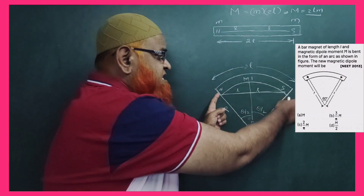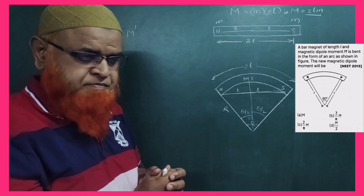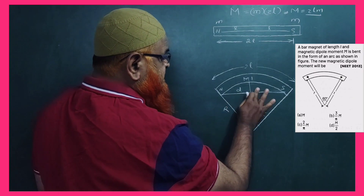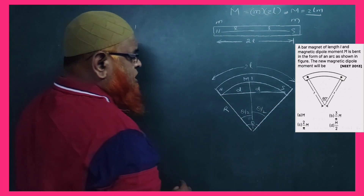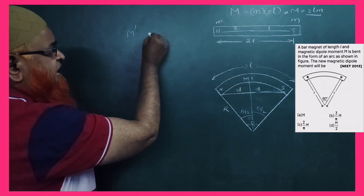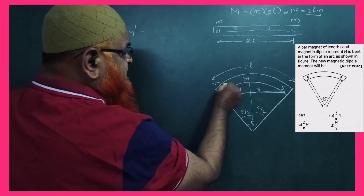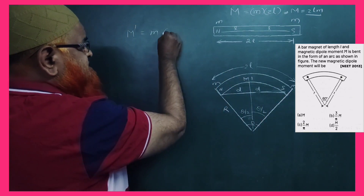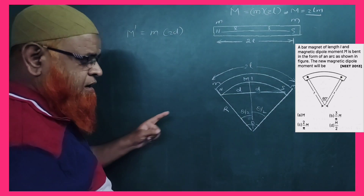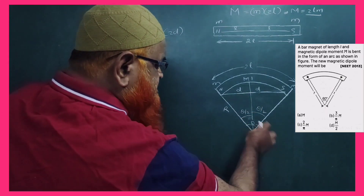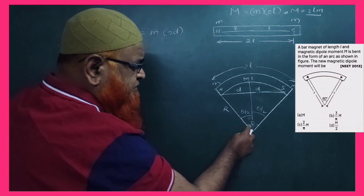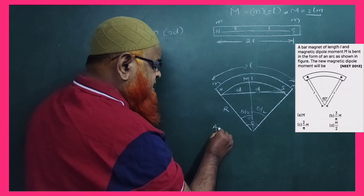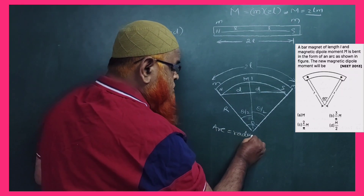When the magnet is bent into an arc, the length of the arc is still 2L. The distance from the center to each pole is D, so the distance between the two poles becomes 2D. The total angle subtended by the arc is theta (θ). From mensuration, arc length equals radius times angle: arc = R × θ.